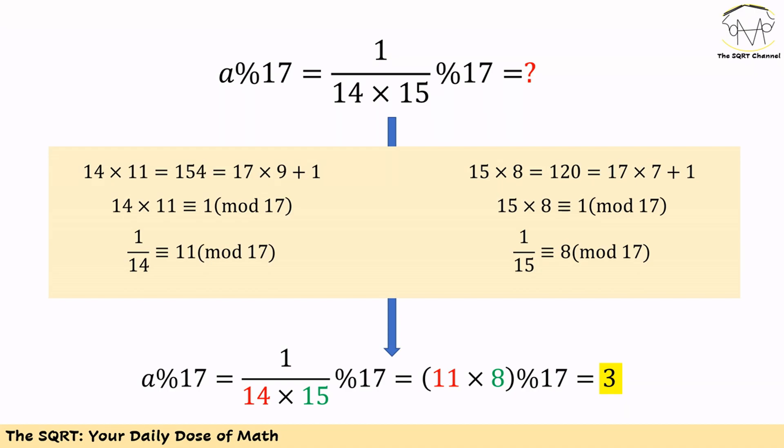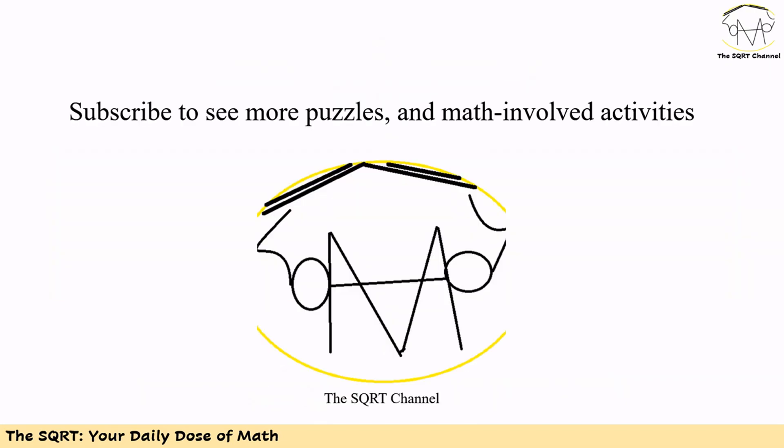At the end, a mod 17 equals 11 times 8 mod 17, which is 88 mod 17, which equals 3. That's our final answer. Thanks for watching — if you'd like to see more puzzles and math-related activities, please subscribe to the channel.